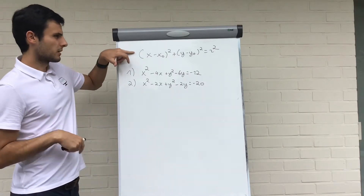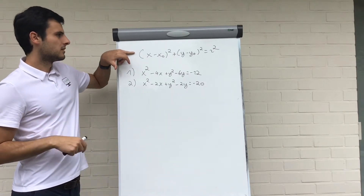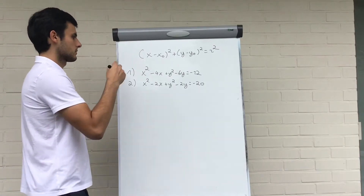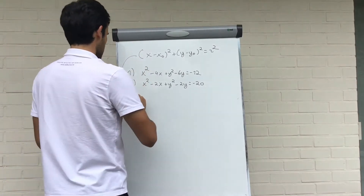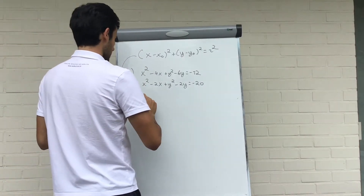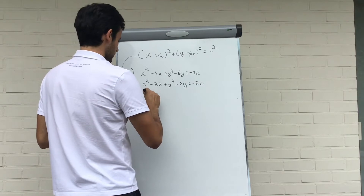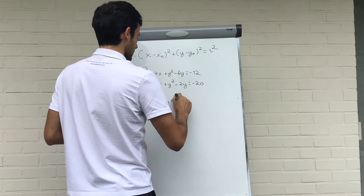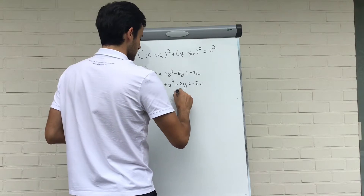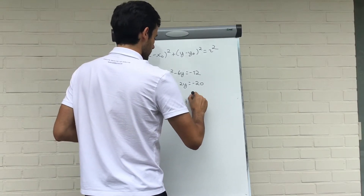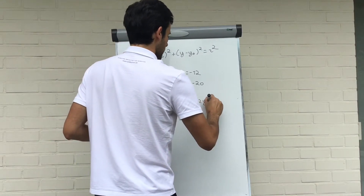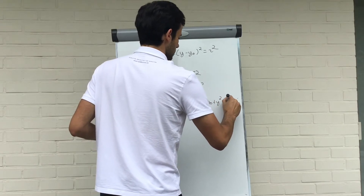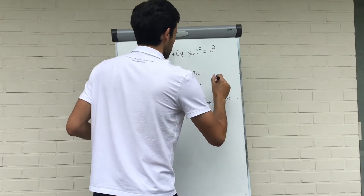This is the standard equation of a circle. We're going to expand it, so we get x squared minus 2x·x₀ plus x₀ squared plus y squared minus 2y·y₀ plus y₀ squared is equal to the radius squared.